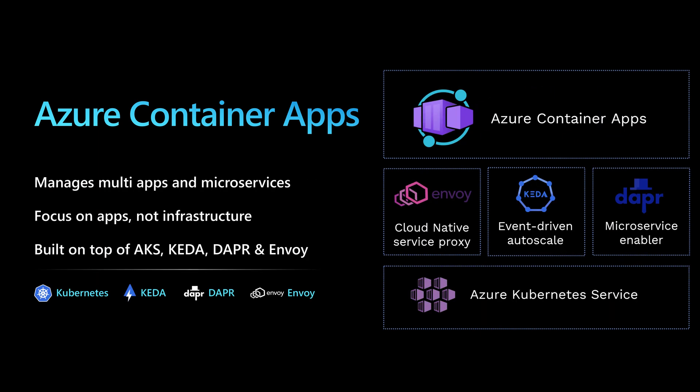The architecture of a container app is built on top of AKS, the Azure Kubernetes Service, and it will use some open source components — like Envoy to manage the proxy and networking within the cluster between the services — and it will use KEDA for event-driven autoscaling to scale out the containers within the container apps. It will also use the DAPR platform for managing the microservices. So with container apps, it's like you have a fully managed AKS cluster with these platforms installed on top, and then you can deploy your containers and benefit from all of these infrastructures.